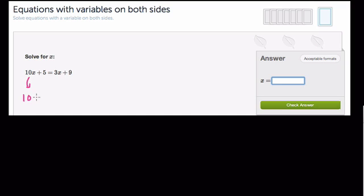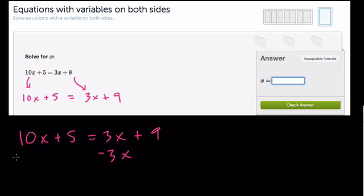So here we have 10x plus 5, and here we have, notice it's 3x plus 9. So it's usually a good idea to subtract the smaller coefficient from the larger to avoid negative numbers. So here when I have 10x plus 5 equals 3x plus 9, my first step is to subtract 3x from both sides.